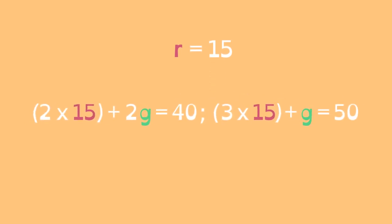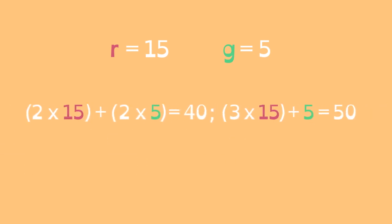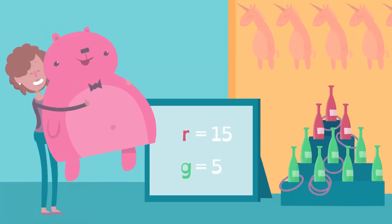Now that we know the value of one variable, we can solve for the other variable. When we solve the equation for g, we can see the result is 5. By solving this pair of linear equations, we can find the answer to Kate's question.